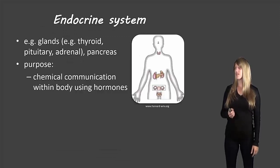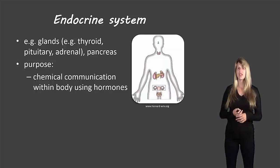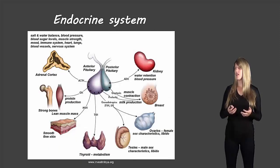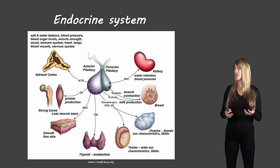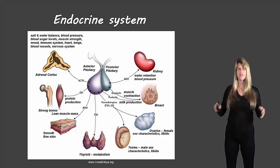The next system is the endocrine system. This includes glands such as the thyroid, pituitary, and adrenal glands, as well as the pancreas. Its purpose is chemical communication within the body using hormones. Examples of different glands are part of this system, and looking at the pituitary gland specifically, it has roles including water retention and blood pressure regulation, protein production, and muscle contraction — sending chemical signals throughout the body.